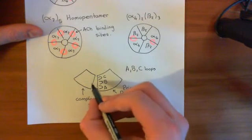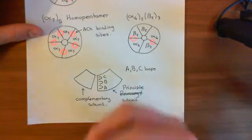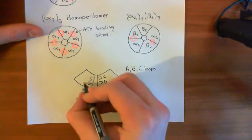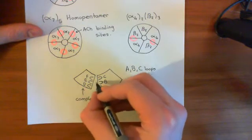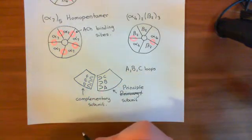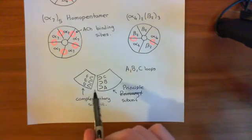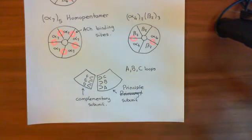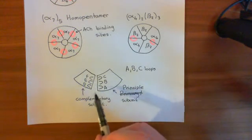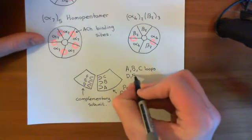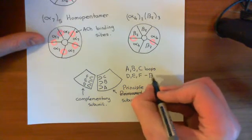The complementary subunit also provides what are known as loops, but they're not actually loops — they're beta-pleated sheets. It provides what are known as the D, E, and F loops, which are just the portions of protein facing into this cavity where the acetylcholine is going to bind — they form the walls of the cavity. So all acetylcholine binding sites on all nicotinic acetylcholine receptors have these same motifs: the A, B, C, D, E, and F loops, although only A, B, C are actually loops — D, E, and F are actually beta-pleated sheets. This is an example of how nomenclature has not kept up with the actual structural evidence.